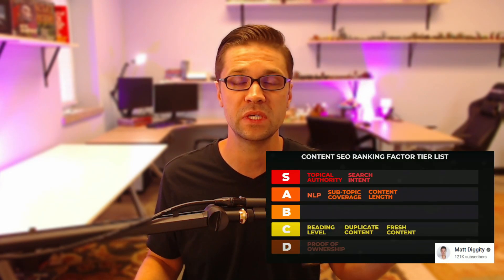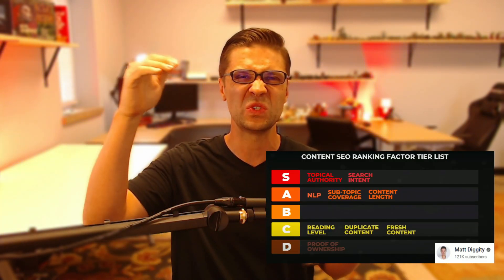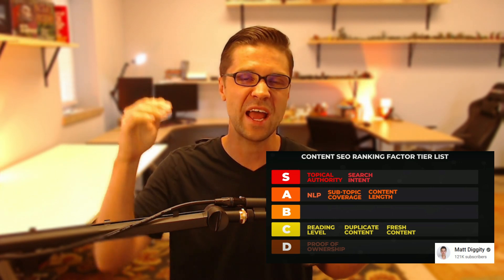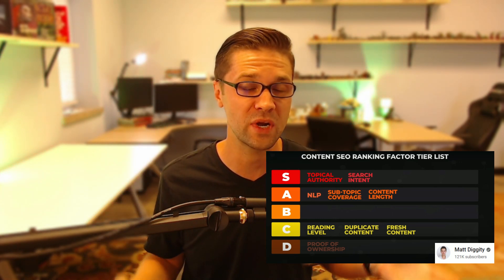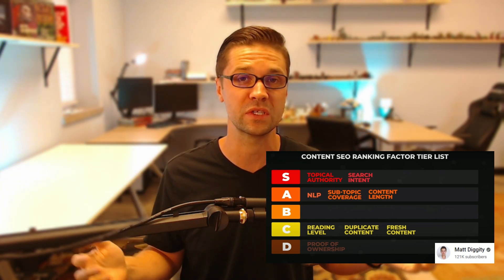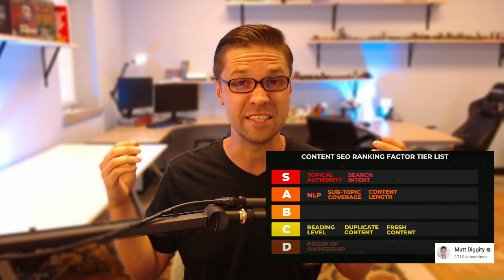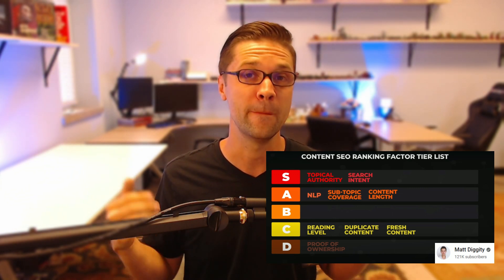Why does this matter for a blog or niche website? Because if you can understand this, you are going to be able to do topical authority content hubs — and this is everything. If you look at Matt Diggity's recent video, he scales different SEO tactics and what matters most. Topical authority is up there big time, and I tend to agree with his list.